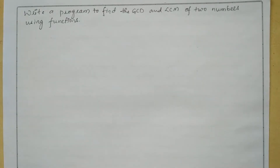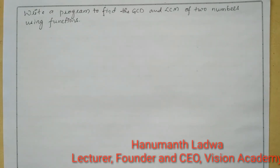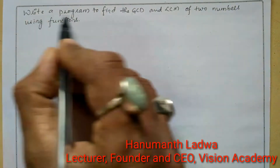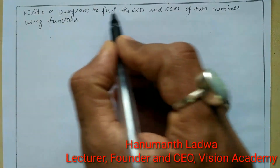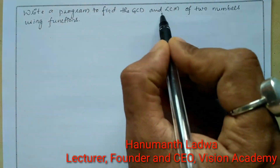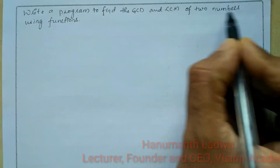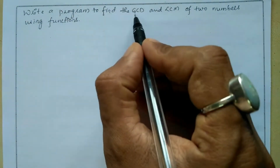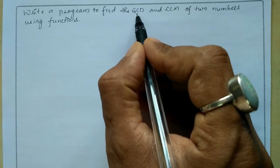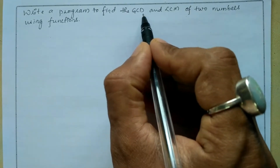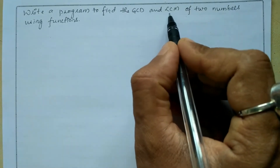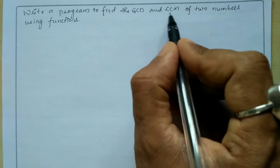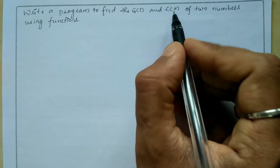Hello and welcome to Vision Academy. My name is Hanuman Tadwa and in this video, we are going to write a program to find the GCD and LCM of two numbers using functions. GCD is greatest common divisor and LCM is least common multiplier.